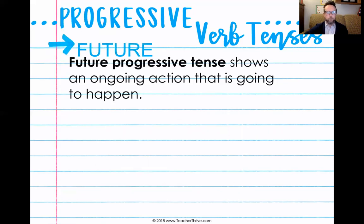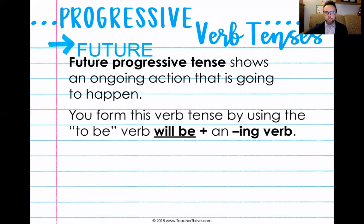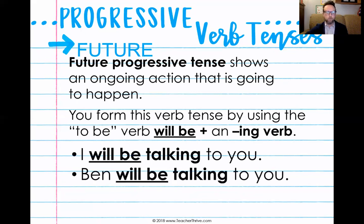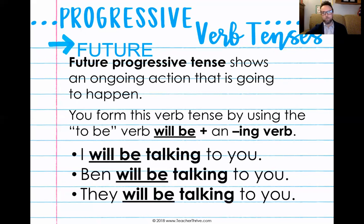Future progressive shows an ongoing action that is going to happen. You will be watching this video in the future, so you will be using: 'you will be watching,' 'you will be listening,' 'I will be talking.' So past progressive used was or were plus -ing. Present progressive: am, is, or are plus -ing. And future progressive: will be plus -ing. Notice that 'I' and 'Ben' are both singular and 'they' is plural, but for future progressive it doesn't matter — you always use 'will be' plus an -ing verb.